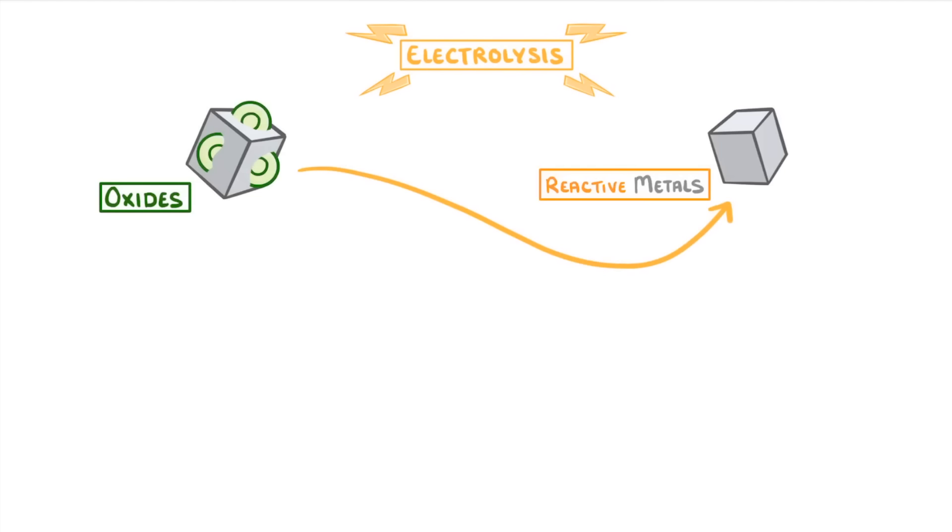In today's video, we're going to see how we can use electrolysis to extract reactive metals from their oxides, by first melting them into their molten ionic compounds.